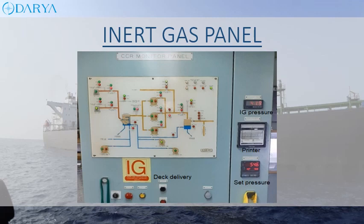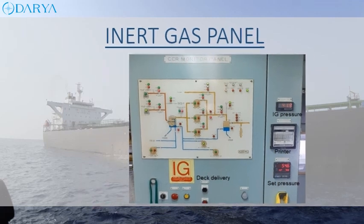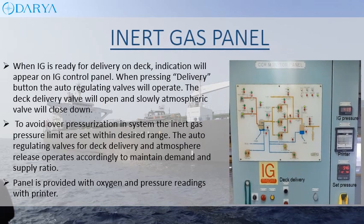When IG is ready for delivery on deck, an indication will appear on the IG control panel. When pressing the delivery button, the auto-regulating valves will operate: the deck delivery valve will open and slowly the atmospheric valve will close down. To avoid over-pressurization, the inert gas pressure limits are set within a desired range. The auto-regulating valves for deck delivery and atmosphere release operate according to the maintained demand-to-supply ratio. The panel is provided with oxygen and pressure readings with a printer.